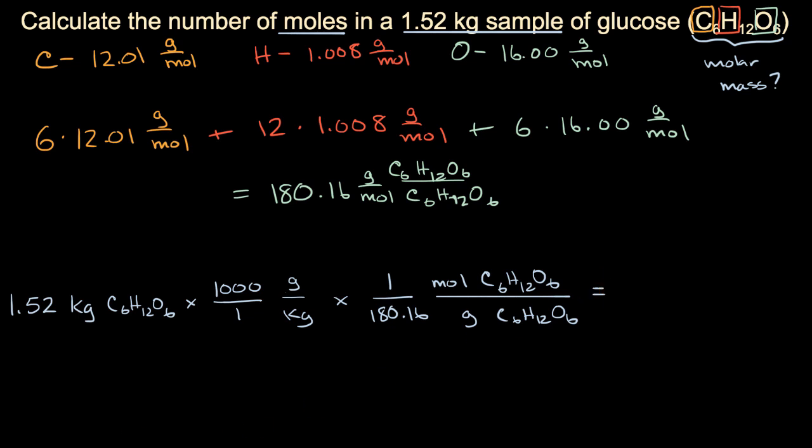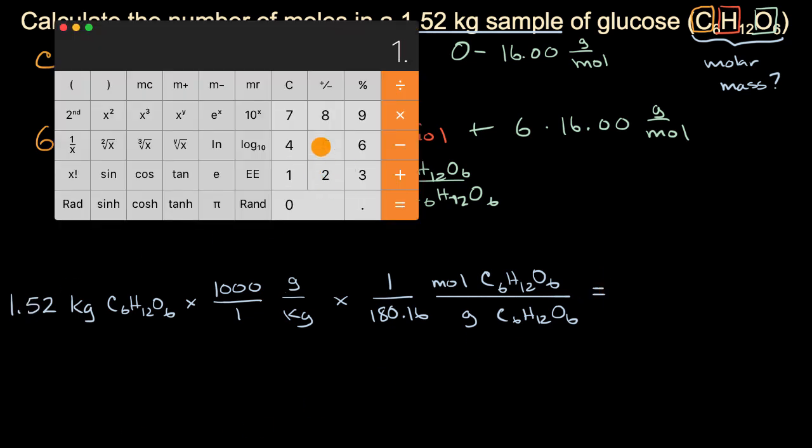C6H12O6. And this is going to get us... We get 1.52 times 1,000, which is the number of grams of glucose we have. And then we're going to divide by 180.16, which gives us this number. And let's see, looking at significant figures, we have three significant figures here, five here, so we want to round it to three significant figures.